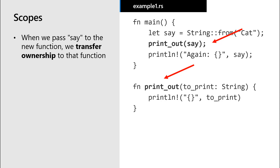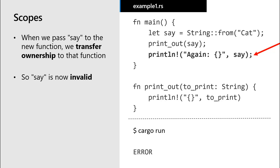Once I transfer ownership, the variable is now out of scope in my main function. If I try to access the value of the say variable in my main function after it has been transferred, I receive an error. The compiler catches that I'm trying to access a value whose ownership has been transferred somewhere else.